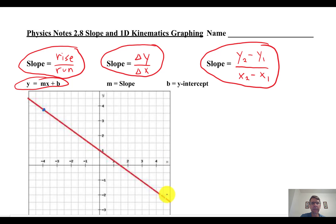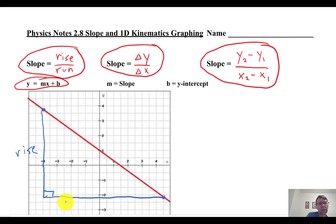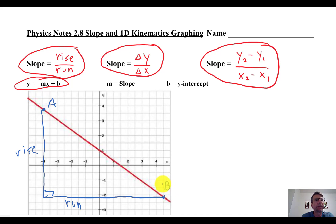You want to pick a couple of points that are far apart. I'll draw a straight line here. If I draw along here and down from that point, that corner is a right angle. The rise is how far up and down it goes, and the run is left to right. I'm going to call this point A and this point B — nothing to do with displacement right now.